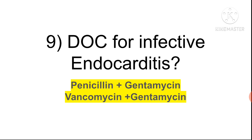Question eight: drug of choice for infective endocarditis is penicillin plus gentamicin. If the patient is allergic to penicillin, then penicillin is replaced by vancomycin — so the answer becomes vancomycin plus gentamicin. Focus on the stem.